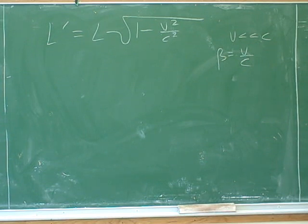So four times this is this. So four times the moving length is the rest length.